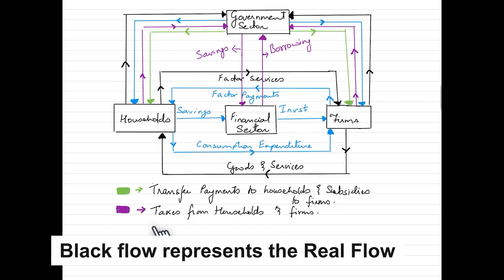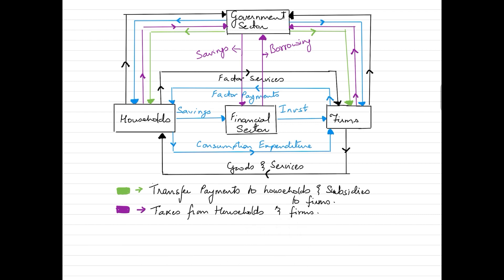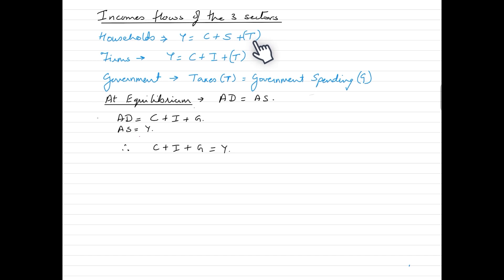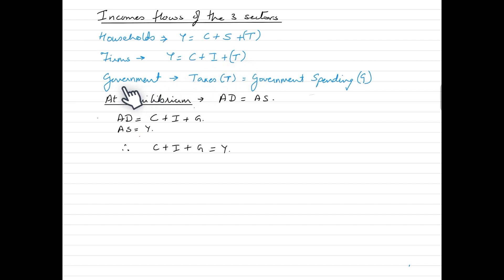Now let's look at how to conclude this circular flow of income. There are three types of income flows from the three sectors. Household income is divided into three components: consumption (C), savings (S), and taxes (T). For firms, there is consumption expenditure, investment, and tax payments to the government. For the government, taxes collected should equal government spending at equilibrium.